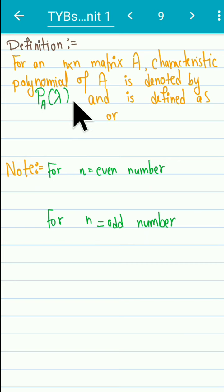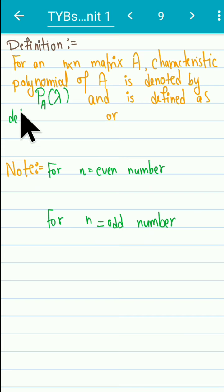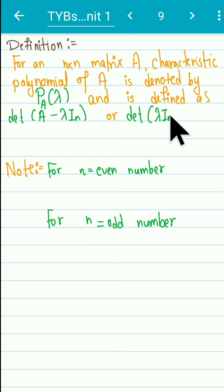The characteristic polynomial is defined as the determinant of (A minus lambda I_n). It could also be defined as the determinant of (lambda I_n minus A) — that is nothing but interchanging the two.